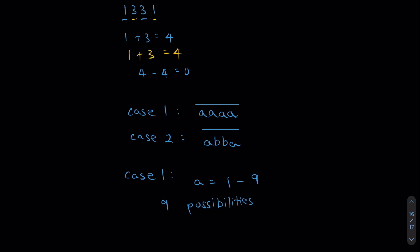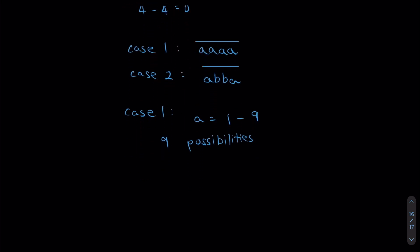Case 2 might be slightly more challenging. So let's look at case 2 now. We'll first look at the letter A. The letter A can be, once again, from 1 to 9. It can't be 0 because if A was 0, then you wouldn't get a four-digit number. So A has 9 possibilities.